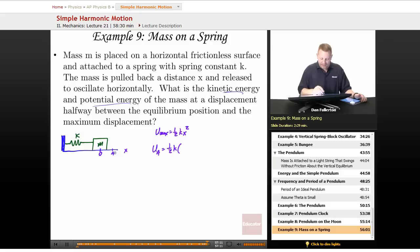Well, A is halfway between these two, so that's going to be at x over 2 squared. So that'll be one-half k times x squared over 4, or one-eighth kx squared.